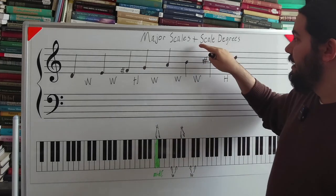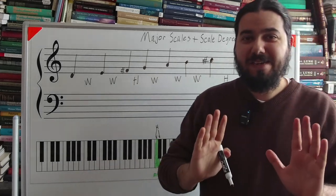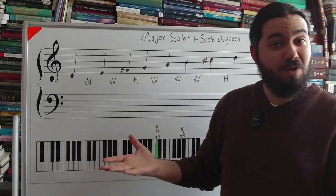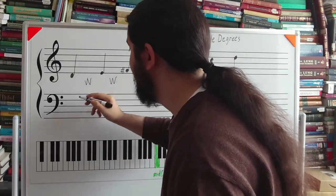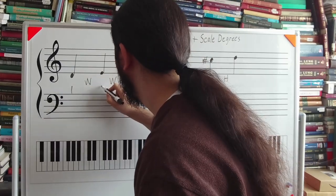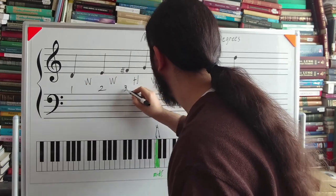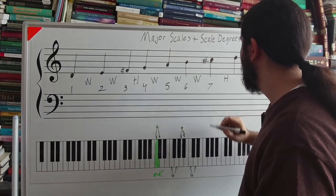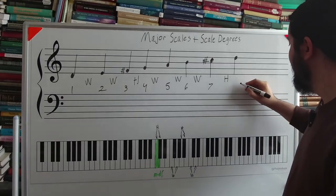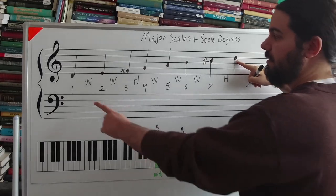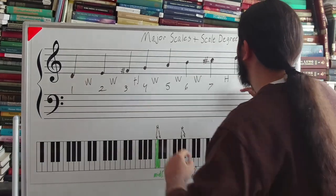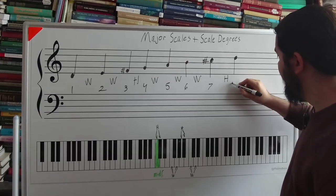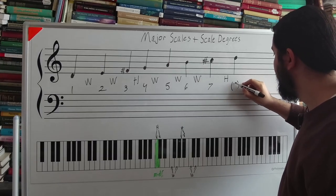When it comes to scale degrees, that is actually extremely simple. Once you have the scale written out, if you know your numbers, all you need to do is write them in: one, two, three, four, five, six, seven. Because this is the same letter name, it technically does not get a scale degree number, even though you can say that it's scale degree eight.